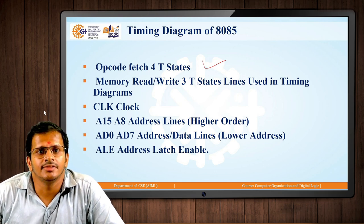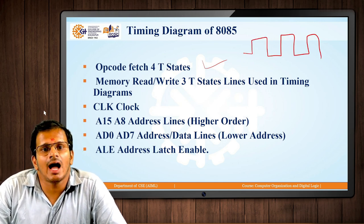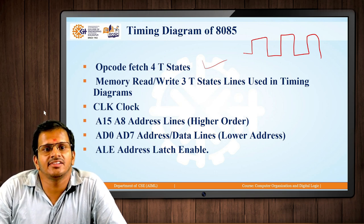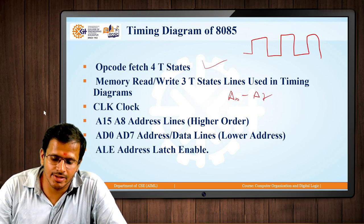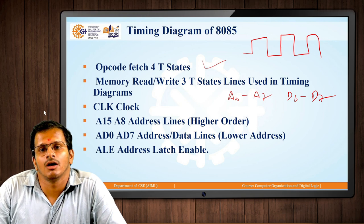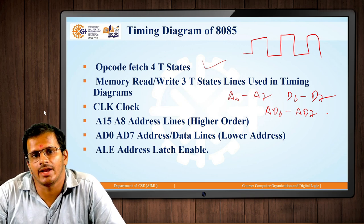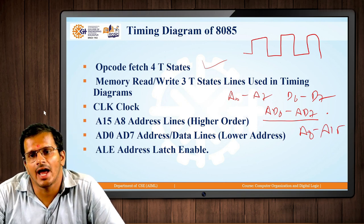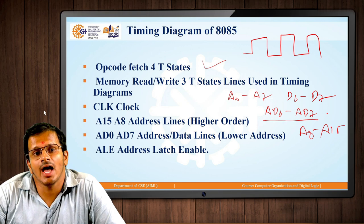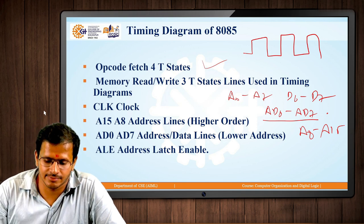The clock signal is represented accordingly. We have address lines from A0 to A7 and data lines from D0 to D7. Both of these are combined to form AD0 to AD7. We also have higher-order address lines A8 to A15. To determine whether AD0 to AD7 should be used as address lines or data lines, we use a specific pin.